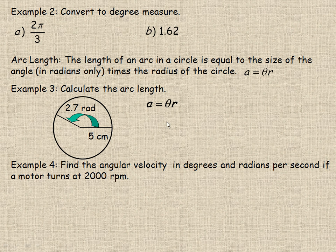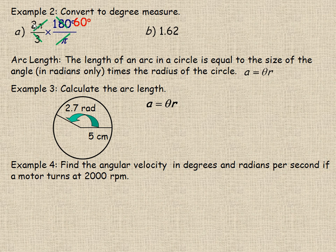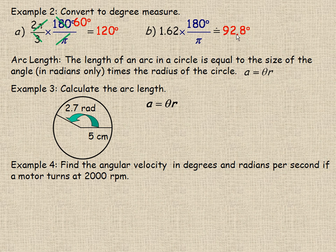Flipping to the second page, in example 2 we're asked to convert to degree measure. For 2 pi over 3 radians, I multiply by 180 degrees over pi. The pi's divide out, leaving an answer in degrees. 3 goes into 180 sixty times, so I'm left with 2 times 60, which is exactly 120 degrees. For 1.62 — not in terms of pi — I multiply by 180 degrees over pi and compute 1.62 times 180 divided by pi, giving approximately 92.8 degrees.